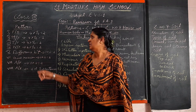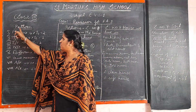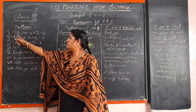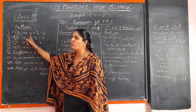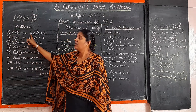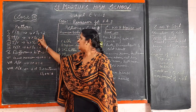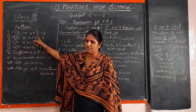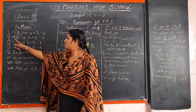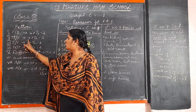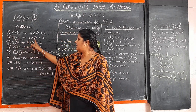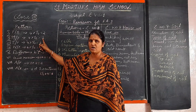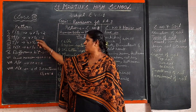Coming back to the pattern for FA 3: the first section is fill in the blanks — four portions, two marks, each half mark. The second section is match the following — four portions, each half mark, equal to two marks.